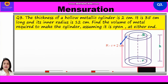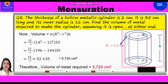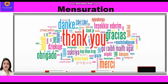Further, volume is equal to pi in bracket capital R square minus small r square into h. Now, we shall substitute the values and write 22 by 7 in bracket 14 square minus 12 square into 35. Further, we will write 22 by 7 in bracket 196 minus 144 into 35. Further, 22 by 7 into 52 into 35, which is equal to 5720 centimeter cube. Therefore, the volume of metal required is 5720 centimeter cube. Hope you have understood all these three questions. Thank you everyone.